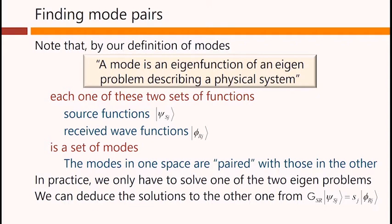In practice, we only have to solve one of the two eigenproblems. We can deduce the solutions to the other one from, for example, GSr operating on Psi Sj gives us Sj times Phi rj.